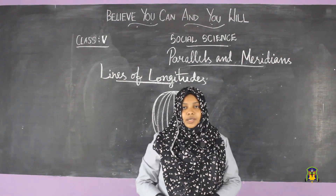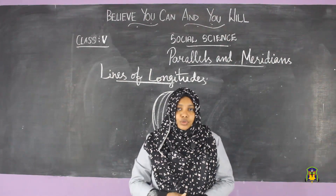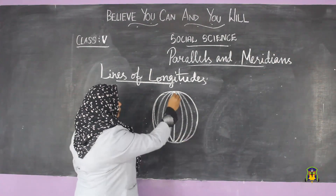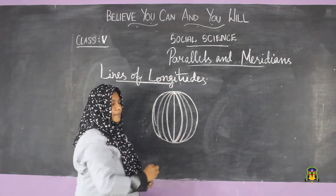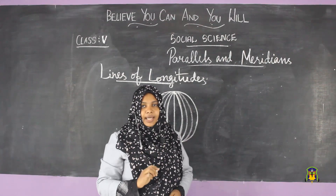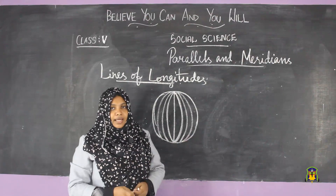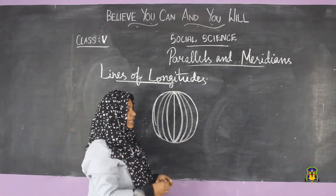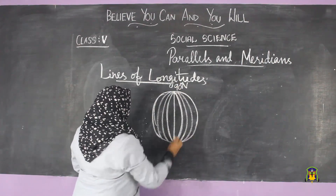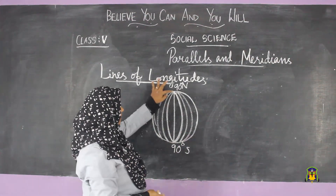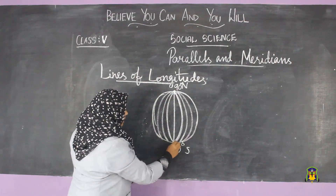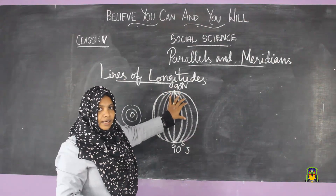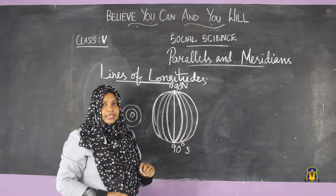Now we can check the facts about longitudes. The first fact: all meridians or lines of longitudes are of the same length. Latitudes are not the same length, but longitudinal lines are. The second fact: meridians cut the parallels at right angles — 90 degrees. That means 90 degrees north and 90 degrees south. Latitudes are full circles and do not cut anywhere, but longitudes cut the parallels at right angles.